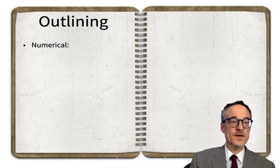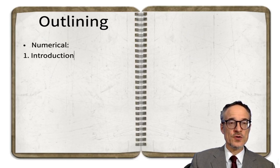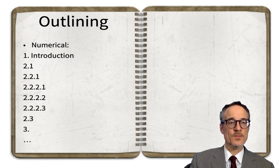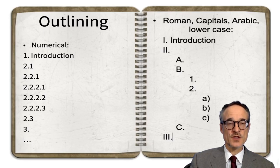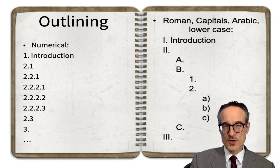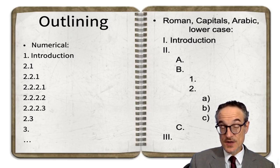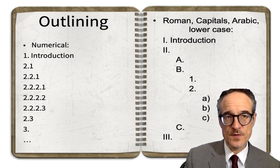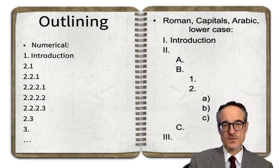When you're outlining, there are different ways to organize your system. You can use a number system: 1, 2.1, 2.2.1, 2.2.2.1, and so on. Another way is using Roman numerals, then capital letters, then Arabic numerals, and then lowercase letters. There are different systems for organizing a piece of writing.